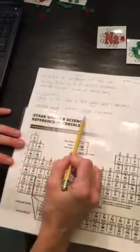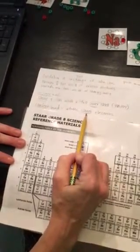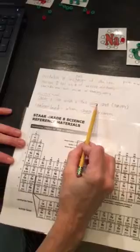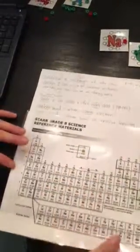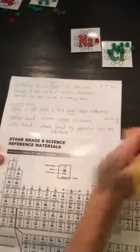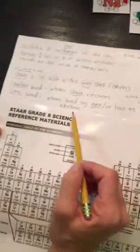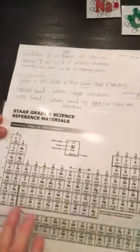A covalent bond is when atoms fill this outer shell by sharing electrons to get to that outer octet rule that you've learned about in the video, which octet meaning eight. That means full. Ionic bond is when they gain or lose an electron to fill that octet rule. So you should remember covalent and ionic.